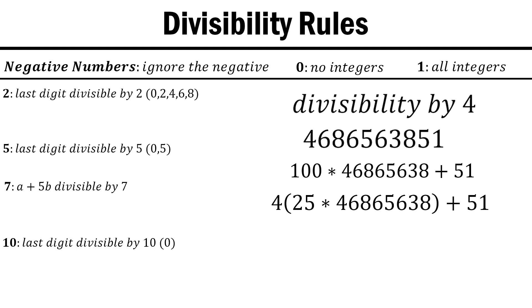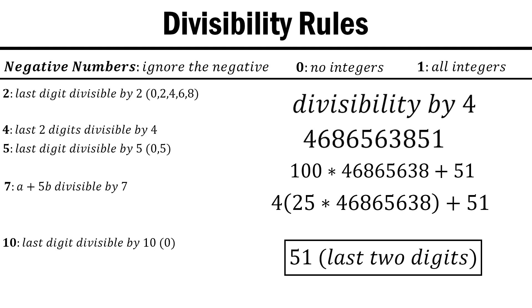Then, since we know it divides that large multiple, all we have to do is check the remainder. In this case, we just have to check if 51 is divisible by 4. It is not, so therefore the whole number is not as well.